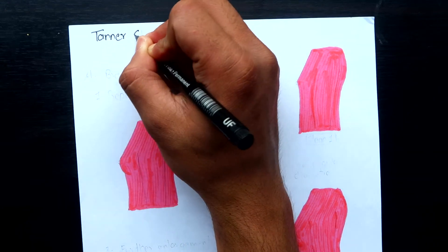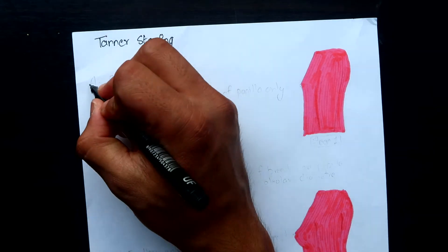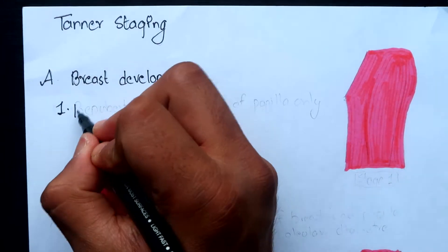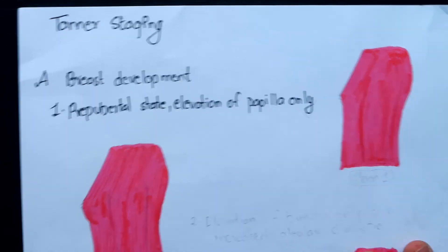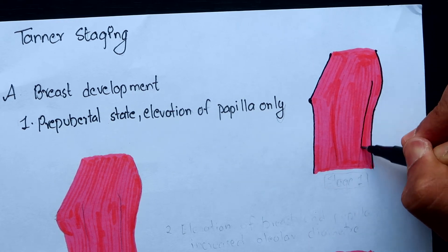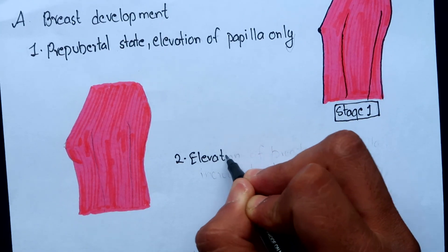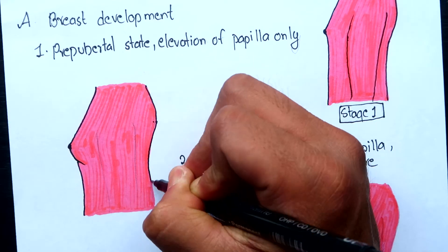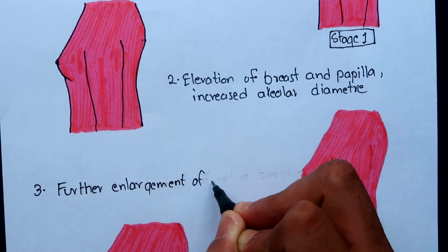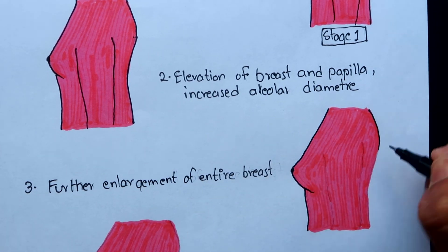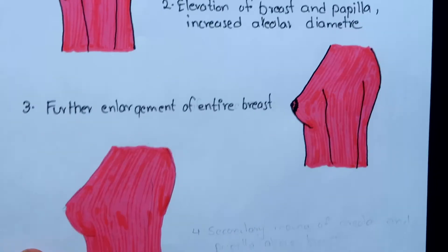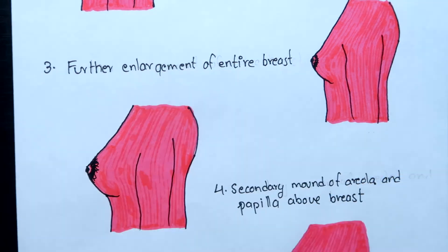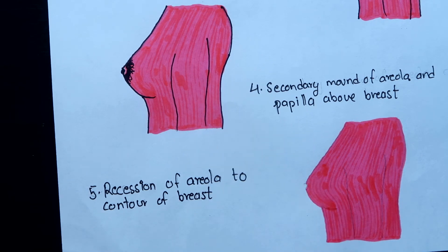According to Tanner, breast and pubic hair development at puberty are divided into 5 stages. Stage 1 is the prepubertal state with elevation of papilla only. In stage 2, there is elevation of breast and papilla along with increased diameter of the areola. In stage 3, there is further enlargement of the entire breast. In stage 4, secondary mound of areola and papilla projecting above the breast tissue. And in stage 5, recession of the areola to the contour of the breast is appreciated.